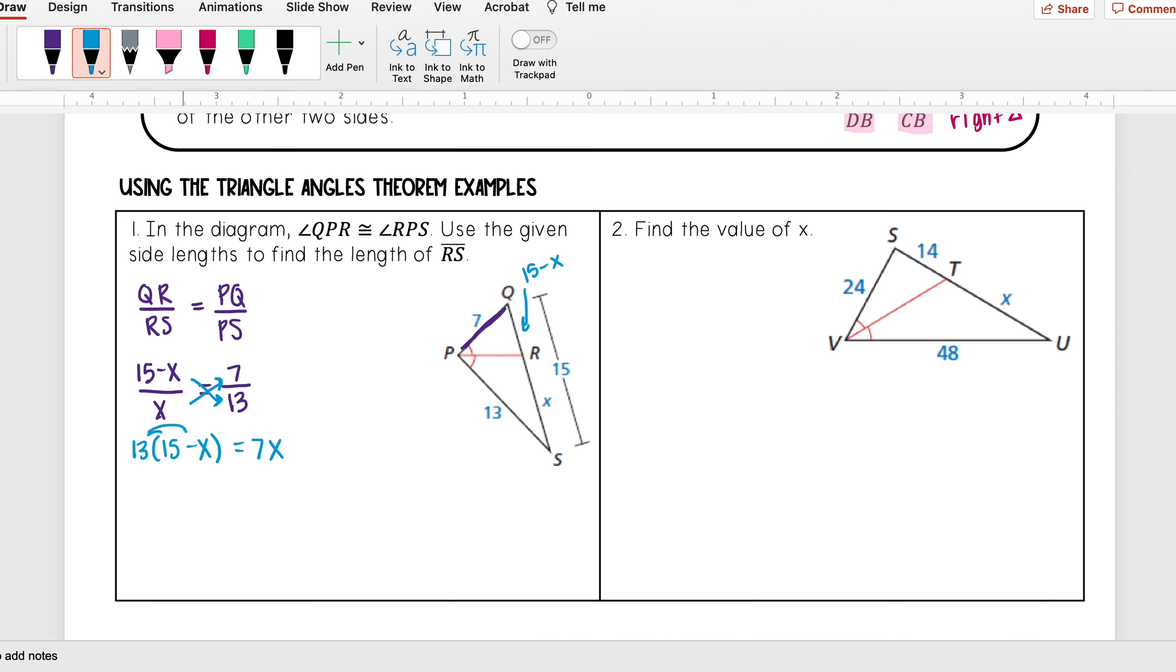Distribute my 13, so 13 times 15, I get 195. 13 times negative x, I get negative 13x. Add 13x to both sides. So 195 is equal to 20x, and then when I divide both sides by 20, I get that x is equal to 9.75.